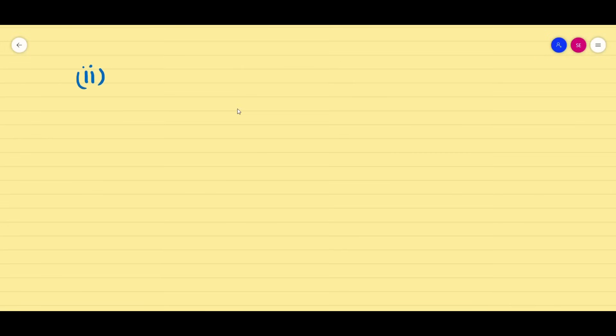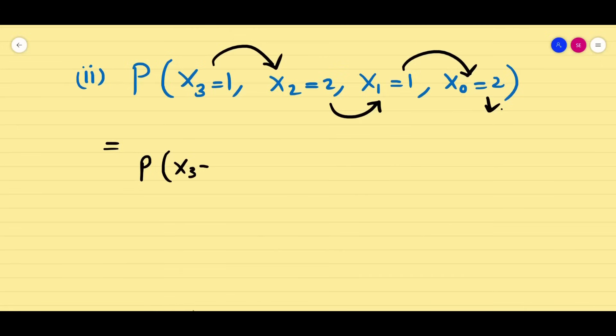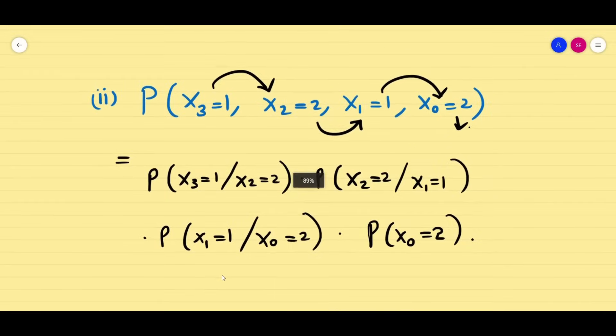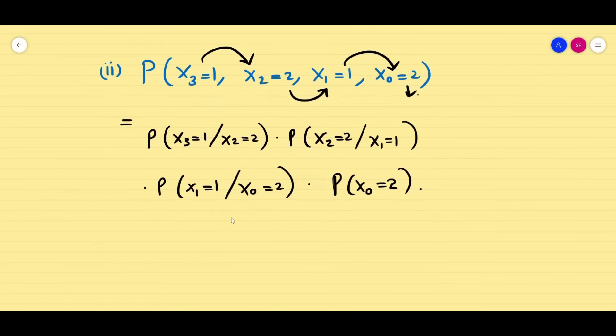Now the second part of the question: when we see it is sequence of probability, it is going to be very easy when you remember the steps. So X0 = 2, when we do like this, we have to compute this 2, this 2, this 2, and finally this will remain alone. So probability of X3 = 1 with the condition X2 = 2, times X2 = 2 given X1 = 1, times X1 = 1 given X0 = 2, and then finally probability of X0 = 2.